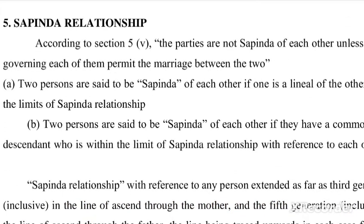The next condition is Sapinda relationship. According to section 5 clause 5, the parties must not be Sapinda of each other unless the custom governing each of them permits marriage between the two. Two persons are said to be Sapinda of each other if one is a linear ascendant of the other within the limits of Sapinda relationship, or if they have a common linear descendant within the limits of Sapinda relationship with reference to each of them.